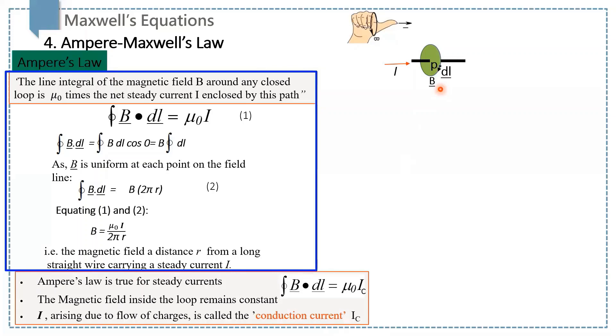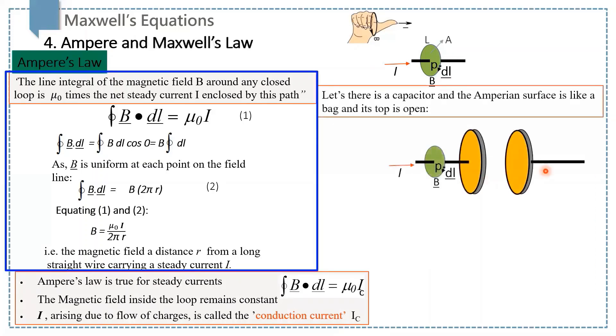According to Maxwell, there were some deficiencies in Ampere's law. He took a capacitor and applied Ampere's law to calculate the magnetic field at a specific point between the capacitor plates. Point B, as shown in this figure, is where he determined the magnetic field due to the conduction electron flowing through the wire, and he found the same result B equals mu0 i over 2 pi r.